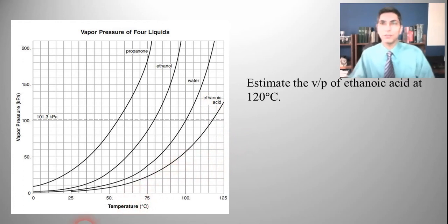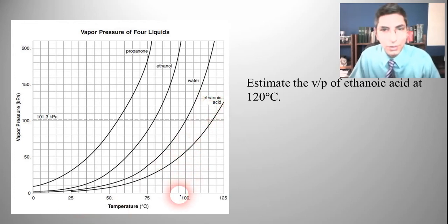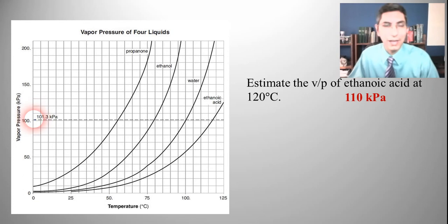The first question is a straightforward read-the-graph question. Estimate the vapor pressure of ethanoic acid at 120 degrees Celsius. Here's the curve for ethanoic acid. We find 120 degrees on the x-axis, go up to the line, and it seems to be right at about 110 kilopascals.